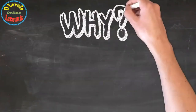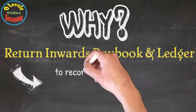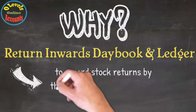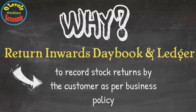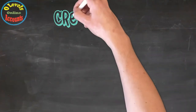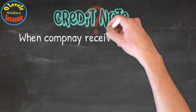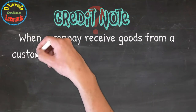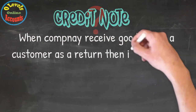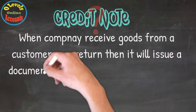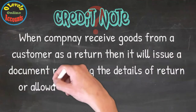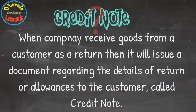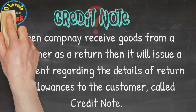The Return Inwards Daybook and Ledger is used to record stock returns by the customer as per business policy. When a company receives goods from a customer as a return, it will issue a document regarding the details of the return or allowances to the customer, called a credit note.